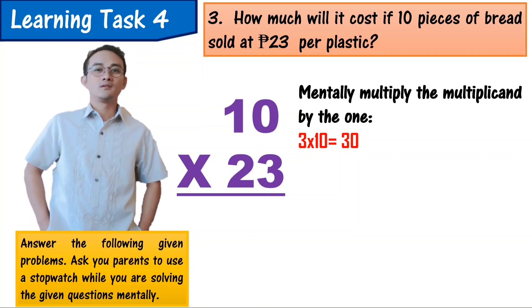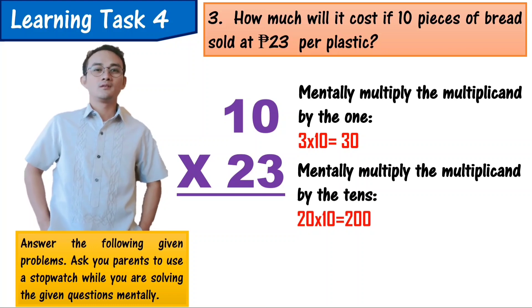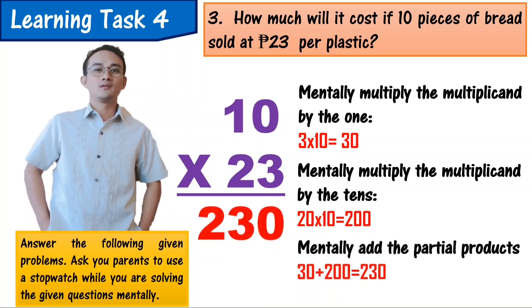Number 3: How much will it cost if 10 pieces of bread sold at 23 pesos per plastic? 10 times 23: 3 times 10 equals 30. The second step is mentally multiplying the multiplicand by the tens of the multiplier which is 2. 20 times 10 equals 200. And the last step, mentally add the partial products: 30 plus 200 equals 230. The total cost of 10 pieces of bread sold at 23 pesos per plastic is 230 pesos.